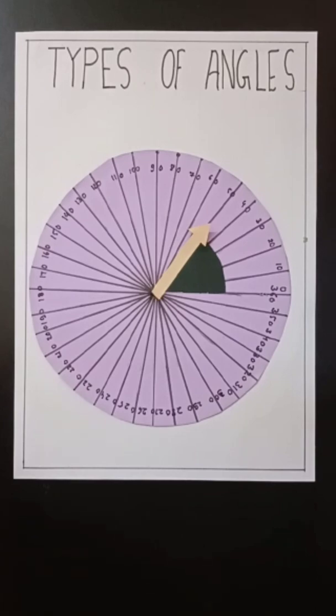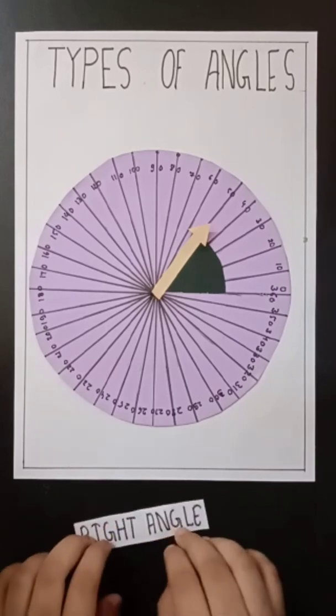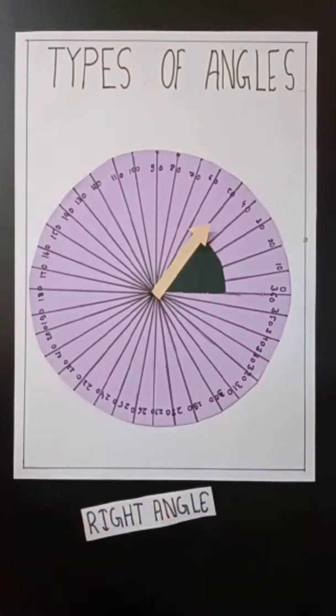Then, right angle. The angle formed by two lines perpendicular to each other is an angle of 90 degrees.